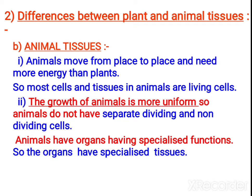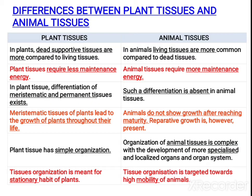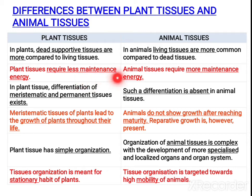In this chapter we are mainly going to study various types of plant tissues and animal tissues. Before going inside the chapter, let us see the differences between plant tissues and animal tissues in a tabular form. In plants, they mainly consist of dead supportive tissues. In animals, living tissues are common compared to dead tissues. Plants require less energy for maintenance, while animal tissues require more energy for maintenance. In plant tissue, meristematic tissues are present, and later they are converted into permanent tissues.